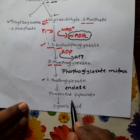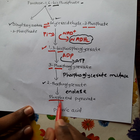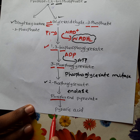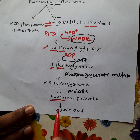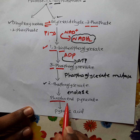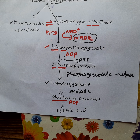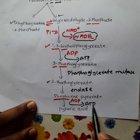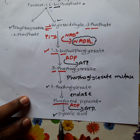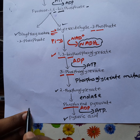Finally, phosphoenolpyruvate converts into pyruvic acid. In phosphoenolpyruvate there is one phosphate group, which is absent in pyruvic acid — so during this conversion a phosphate group is released, accepted by ADP, which converts into ATP.